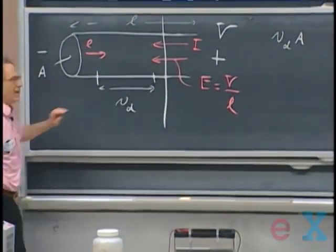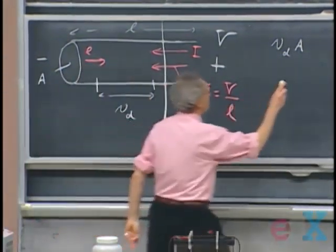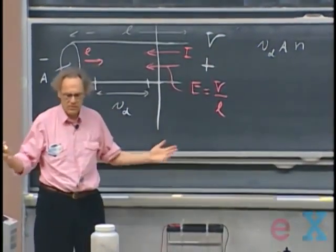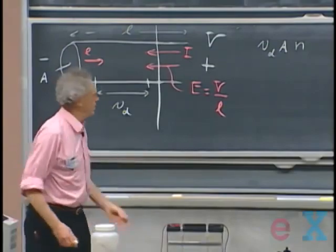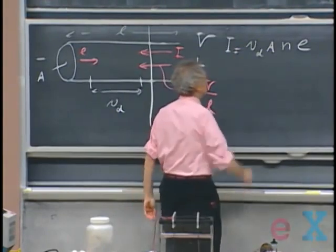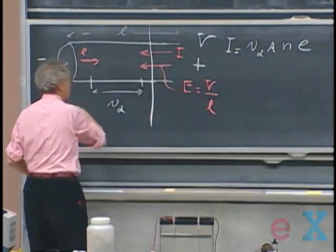But the number of free electrons per cubic meter is called N. So this is now the number of free electrons that passes per second through any cross-section. And each electron has a charge E. And so this is the current that will flow. The current, of course, is in this direction, but that's a detail.